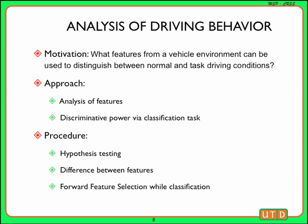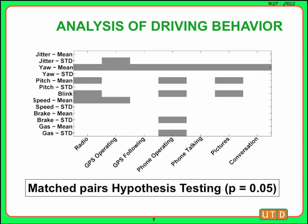The motivation for this analysis is as follows: what are the features from a vehicle environment that can be used to distinguish between normal and task driving behaviors? This has been done in two ways: analysis of features as hypothesis testing and visualizing the difference between features, and using these features and their discriminative power by employing them in classification tasks. A matched-based hypothesis test is estimated to assess whether the differences in the features between each task and the corresponding normal condition are significant. At 95% significance levels, we found the following tasks are significantly different when comparing normal driving features and corresponding task driving features, highlighted in the regions shown in grey.